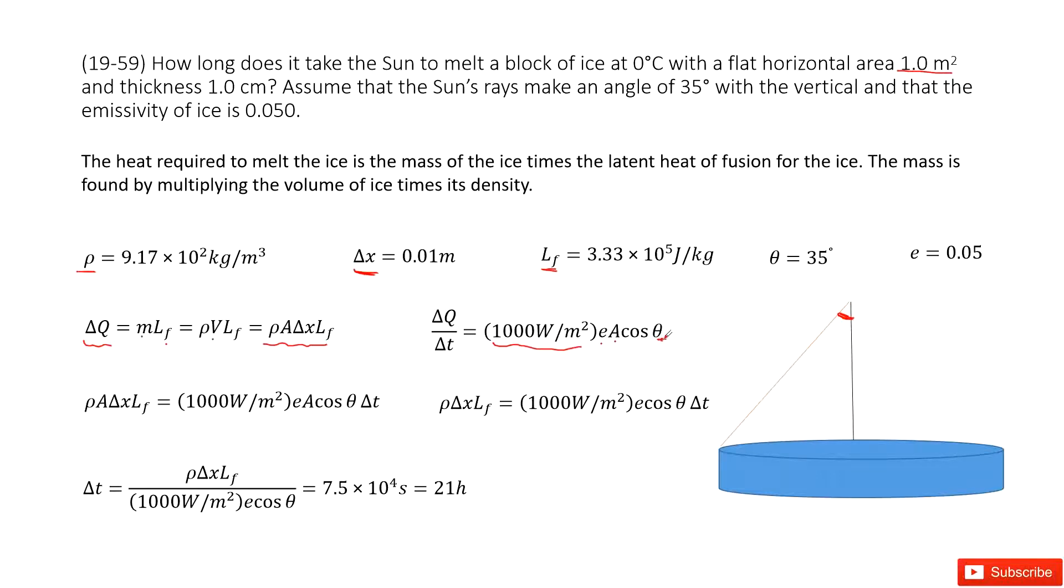Now the energy is conserved. The energy required by the ice to melt equals the energy received from the sun. In this equation, you can see A (area) can be cancelled. Therefore, we can write it this way. Now you can get the function for Δt. Input the known quantities and get the answer.